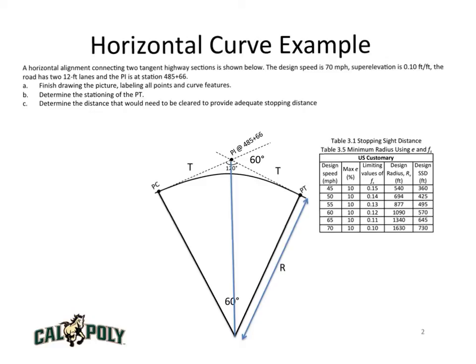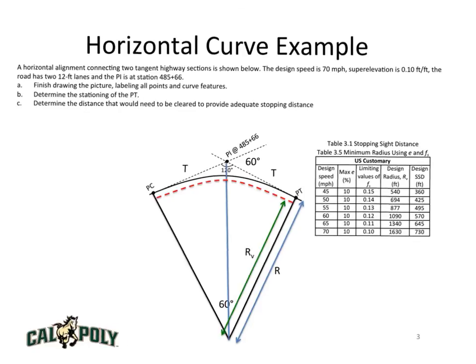That's pretty much the picture. The two tangents are labeled. I've also labeled R sub V, which is the red dashed line.